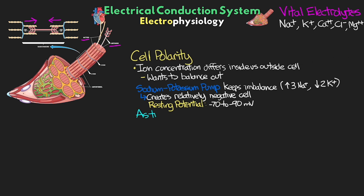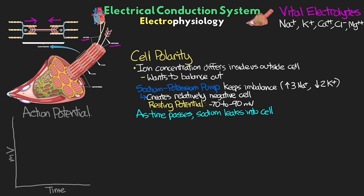As time passes, ions — mainly sodium from outside the cell — are actually going to leak into the cell, making it less and less negative. We can see this represented with the phases of an action potential. This is called phase 4 of the action potential, and here you can see the slow rise of the polarity of the cell from that resting potential. Once the polarity has increased to a certain threshold level, a specialized set of channels open up — something we call fast sodium channels.